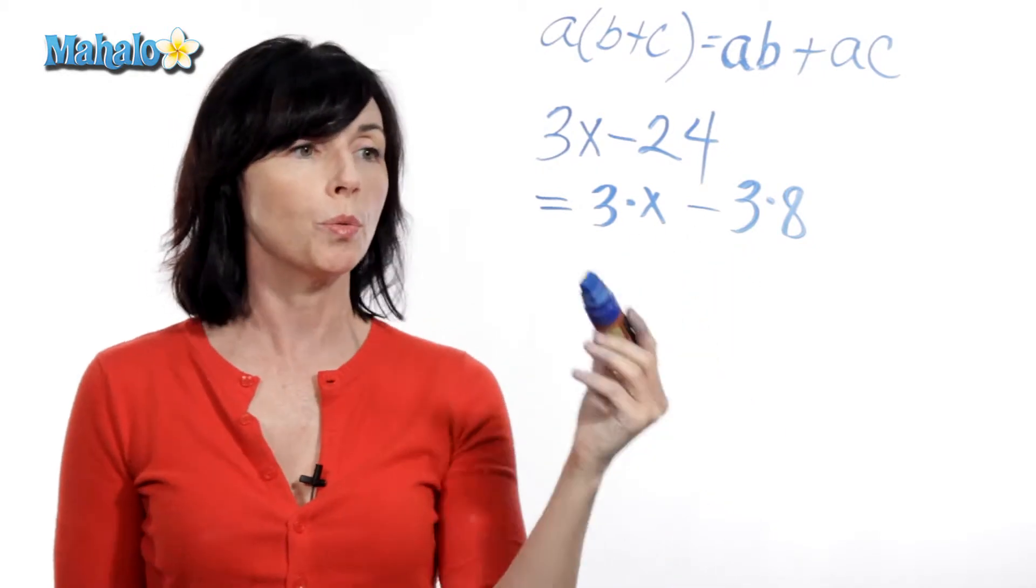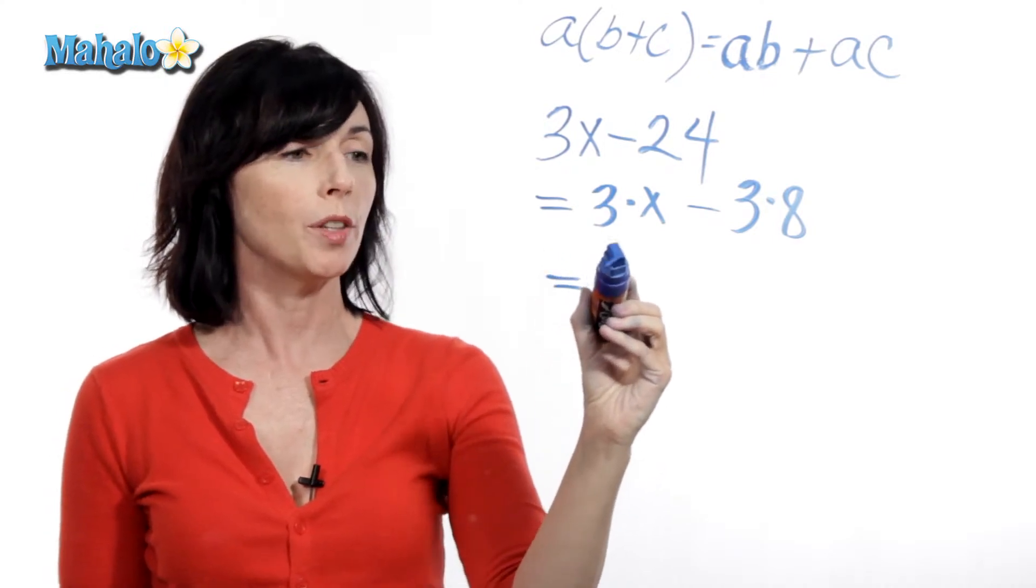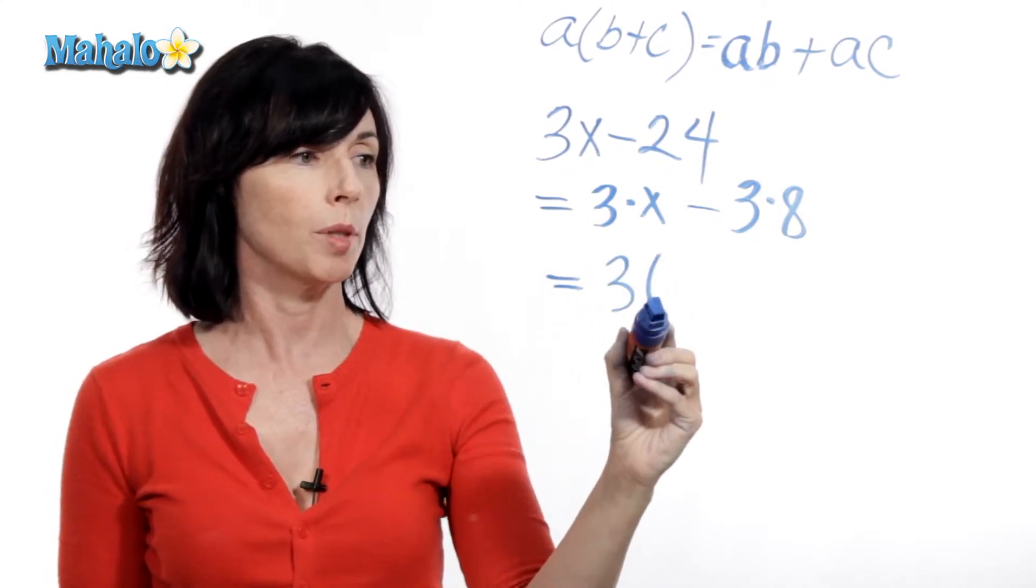So I'm going to rewrite this like this, going this direction with the distributive property. I'm going to write the 3 on the outside, and then I'm going to write my parentheses.